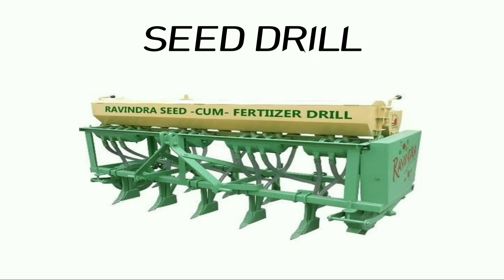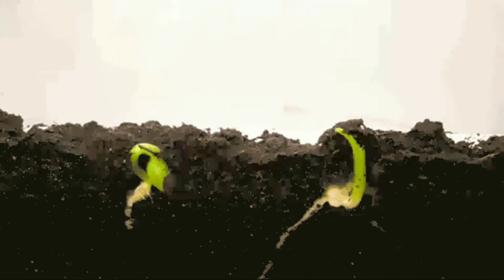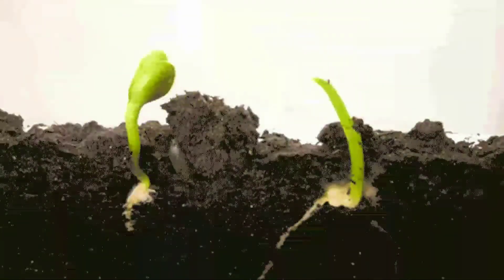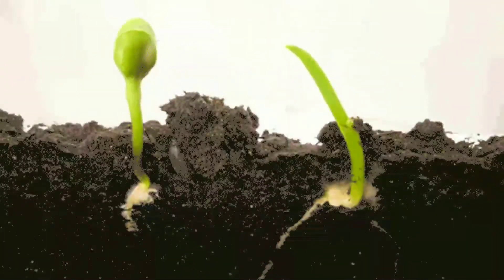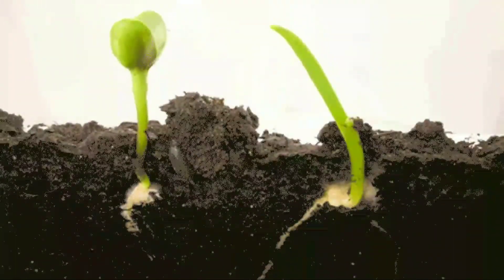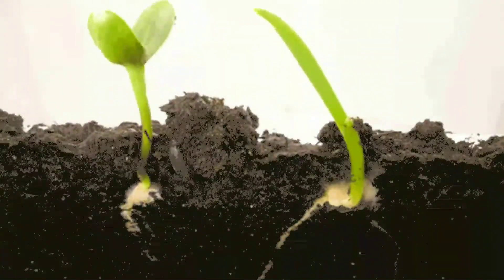Now let us take a look at the modern method, that is the seed drill. The seed drill sows the seeds uniformly at proper distance and at equal depth. Sowing by using a seed drill saves time and also human labor.